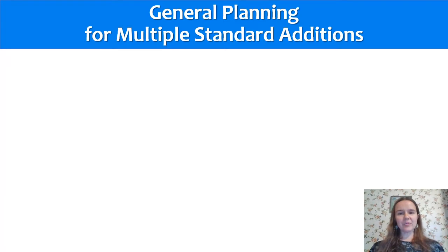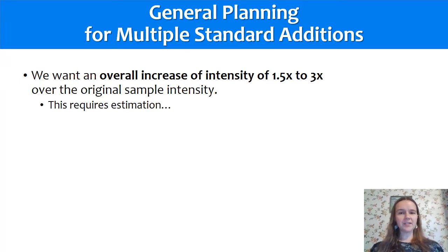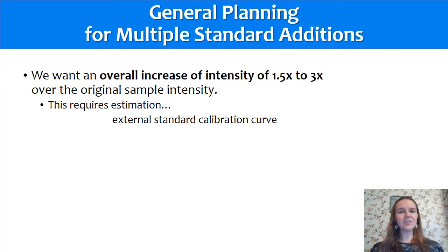The general planning for multiple standard additions basically takes two steps. The first step is to decide how much of an overall increase in intensity we want, and typically it's between one and a half times and three times the original sample intensity. This requires you to estimate your original sample concentration or to measure the original sample intensity, then guess how concentrated it is so you know how much to add in order to get three times more signal. You can estimate it by doing an external standard calibration curve. Although you've probably realized you have matrix effects, which is why you're doing standard additions, you could still use this as a ballpark estimate.